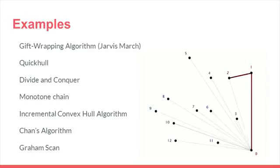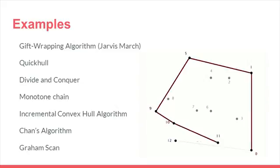There are many examples of convex hull algorithms. The gift wrapping algorithm, which is also called the Jarvis March in two dimensions. Quick hull, or Q hull, which is optimized for two to eight dimensions. Divide and conquer. Monotone chain, incremental convex hull algorithm, Chan's algorithm, and what we'll be talking about later, Graham Scan.